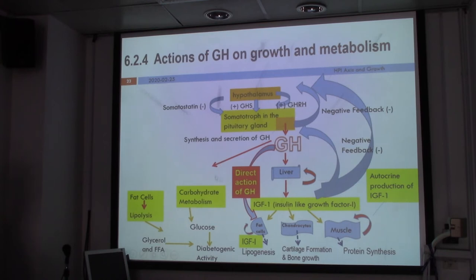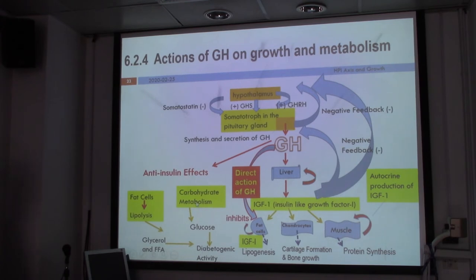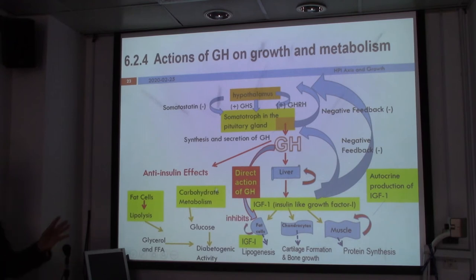Growth hormone will also go beyond the liver and IGFs — it will stimulate carbohydrate metabolism and fat cells for lipolysis and glucose. In general, we have what we call a diabetogenic activity, leading to higher blood glucose levels. So that's the action of growth hormone. Growth hormone also has anti-insulin effects, trying to counteract insulin, because insulin is what brings glucose back into our tissues.